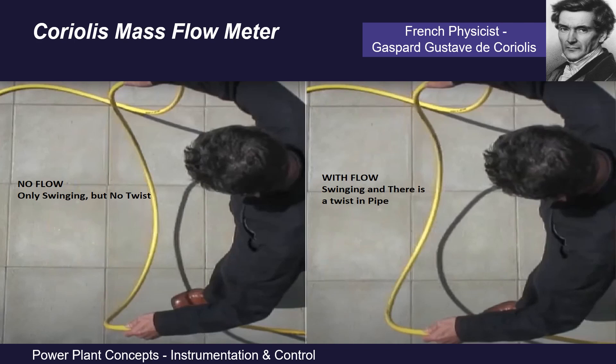Coming to Coriolis mass flow meters — the Coriolis mass flow meter works on the Coriolis effect, hence it is named so. As shown in the left side picture, a hose swings back and forth but does not twist. However, when water flow is turned on and water is forced through this swinging hose, the hose twists — as we can observe in the right side picture. The hose twists as a result of the changing angular velocity in the curved hose. That's the Coriolis effect in action.